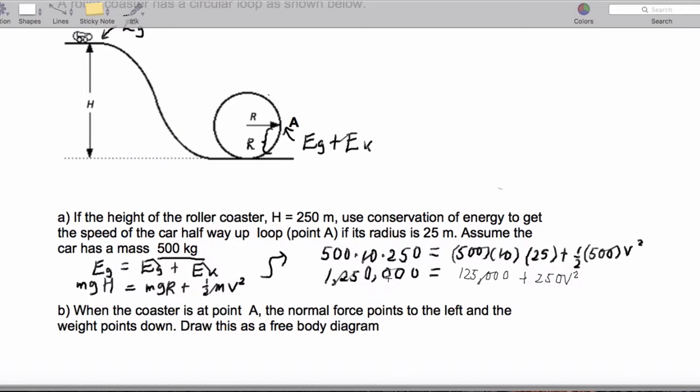And then we're going to simplify this further. I'll just let you simplify this on your own time. But when you do that, you're going to end up getting V equal to 67.1 meters per second. So that is part A.